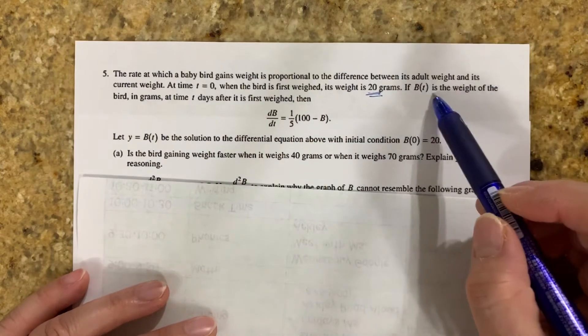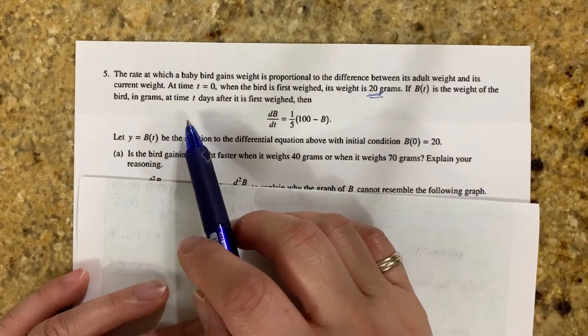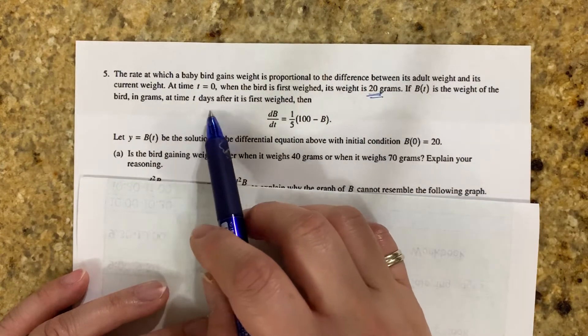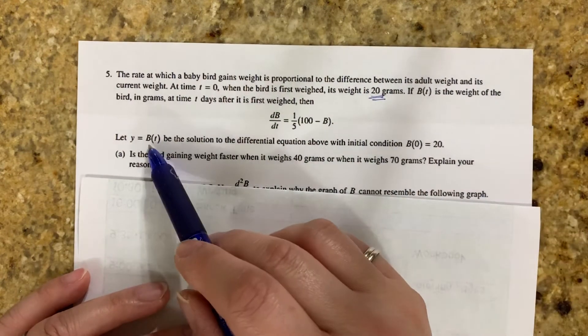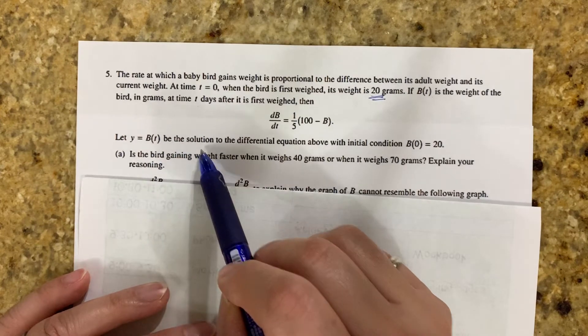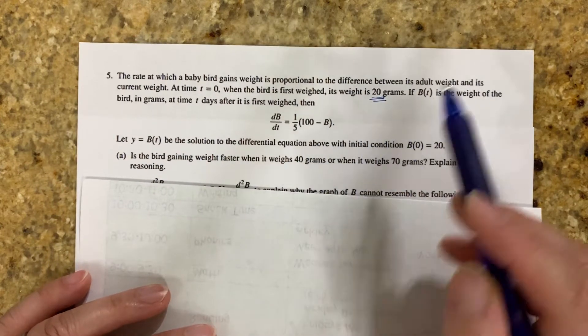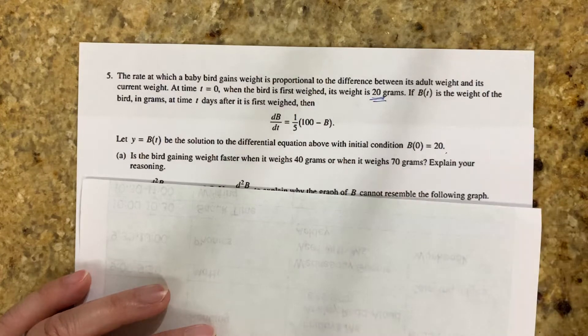So initially it's 20. If b of t is the weight of the bird in grams at time t days after its first weight, then the derivative is equal to this function. Let y equals b of t be the solution to the differential equation above with the initial condition b of 0 equals 20, which we already underlined.